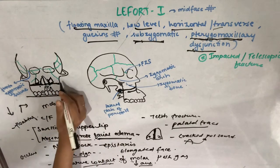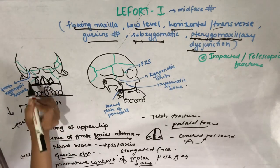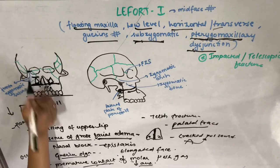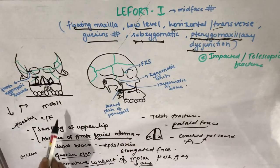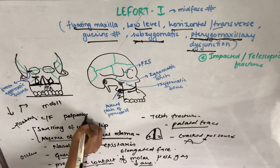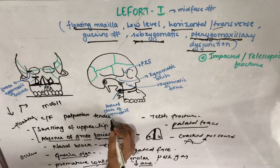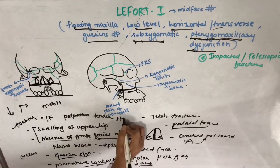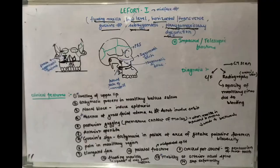There is mobility at the anterior nasal spine, which differentiates Le Fort 1 from Le Fort 2 (where mobility is at the infraorbital margin) and Le Fort 3 (where mobility is at the frontozygomatic suture). Additionally, palpation reveals tenderness and step deformity at the zygomaticomaxillary buttress.